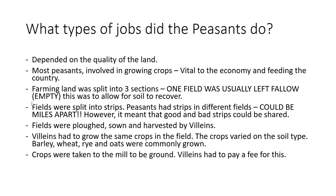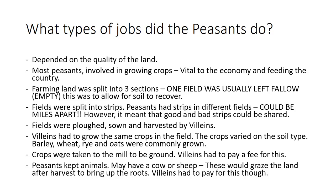Peasants also kept animals — they may have had a cow or a sheep. They would graze the land after harvest to bring up the roots, but the villeins once again had to pay for this right. Even though they had opportunity to do things, the villeins were very limited and would constantly have to pay for things to allow them a better life.